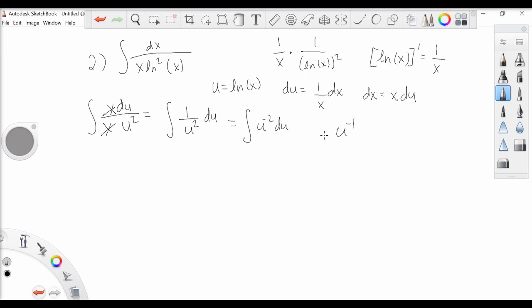Dividing in the front, dividing one by negative one, we simply have negative one over u, plus c. Going back to our equation for u, we rewrite this as minus one over the natural log of x, raised to the minus one power, plus c. And that's all. Thank you.